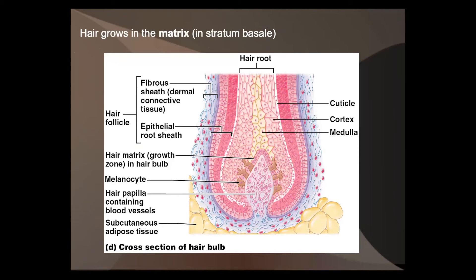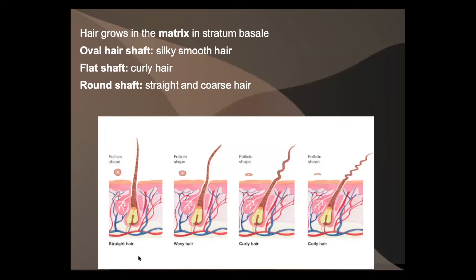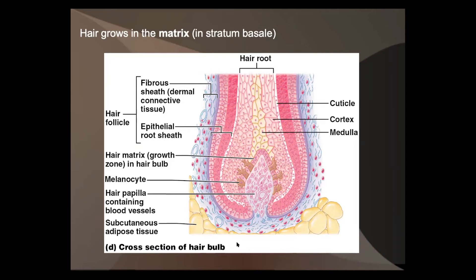Looking more closely at the hair follicle: the cells around the hair become keratinized. The hair grows in the matrix in the deepest layer of the epidermis. Melanocytes along the follicle give the hair pigment. As cells are pushed up, they become flatter, more keratinized, and start to die off.